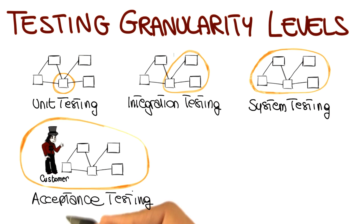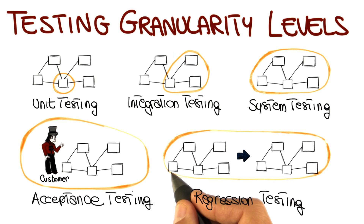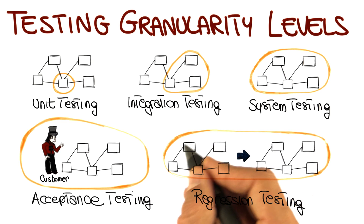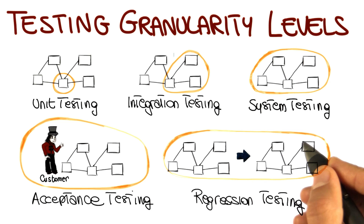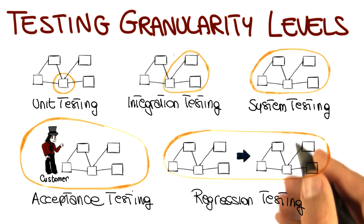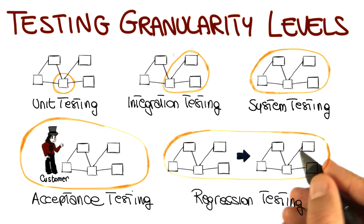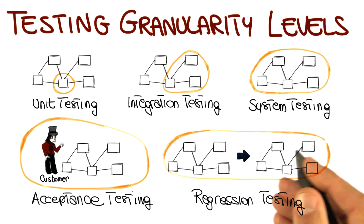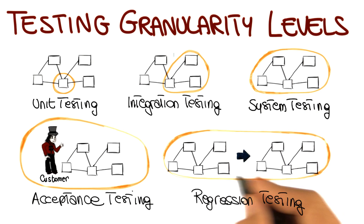The last type of testing to mention is regression testing. Regression testing is the type of testing, or retesting, that we perform every time we change our system, to make sure that the changes behave as intended and that the unchanged code is not negatively affected by those changes.